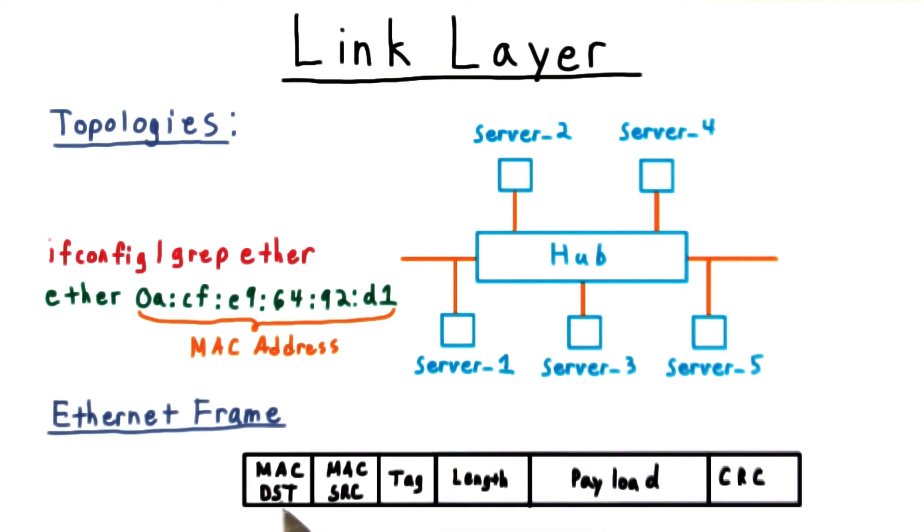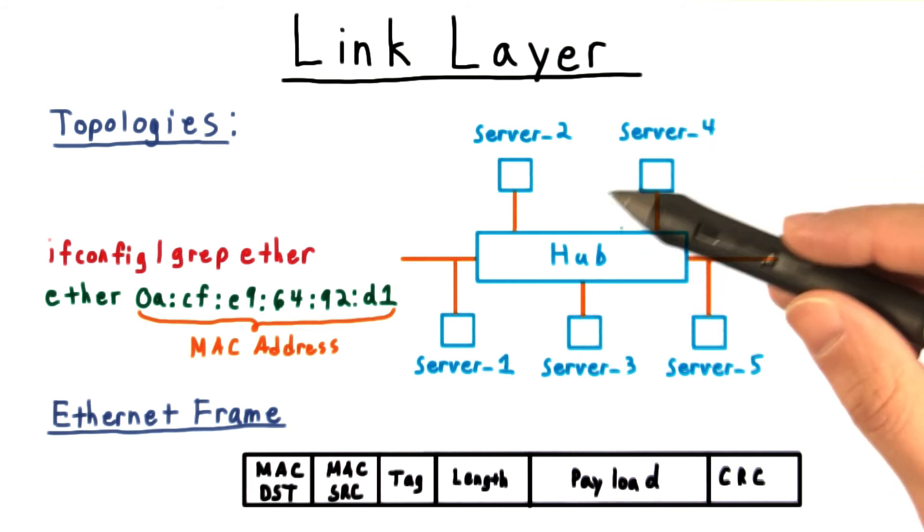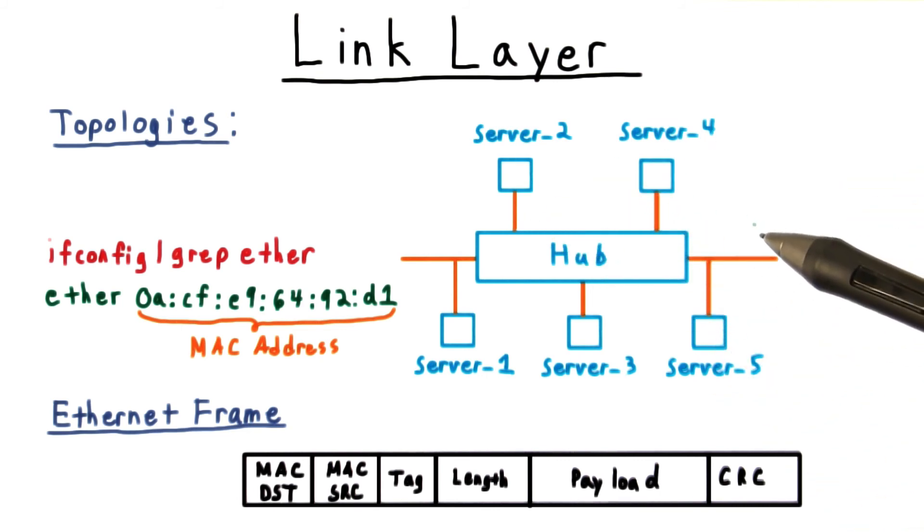The MAC source and MAC destination have designated spots in the Ethernet frame. When the frame is sent through the medium, all the nodes will receive it. But only the one whose MAC address matches the frame destination should pay attention. The rest simply ignore it.